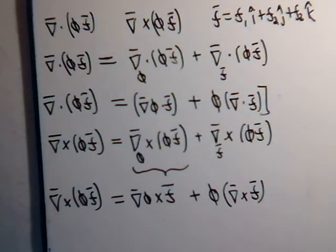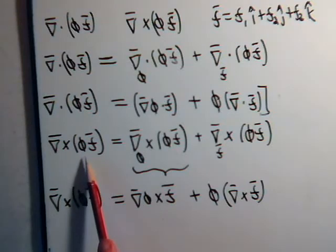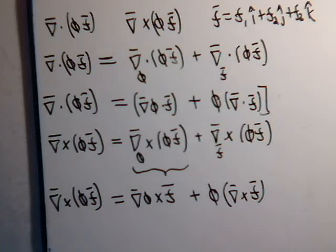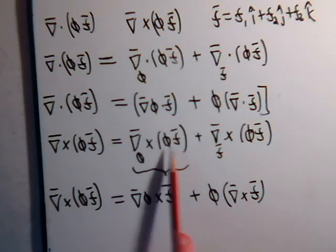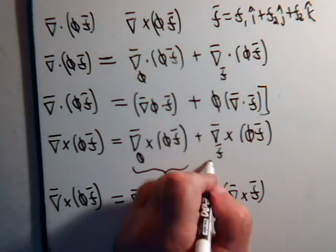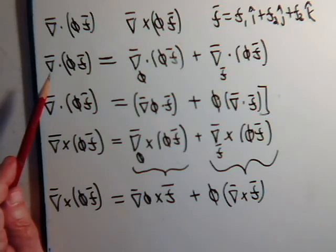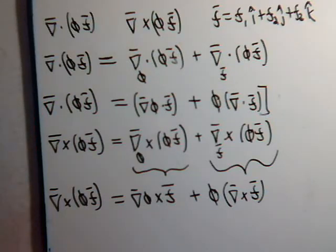So that concludes what we wanted to say about the del operator for different types of vector identities. The main point is that when we have two functions or entities multiplied together, you can split it up by thinking of the del operator as operating on only one of the two at a time — then ask what kind of expression each case gives. This is a real shortcut for dealing with complicated vector expressions. Come back for more videos where we'll put these principles to work with more complicated expressions.